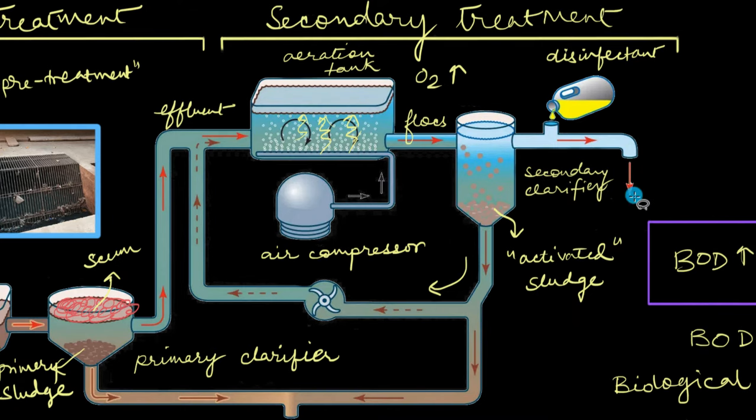This red arrow means that we are releasing the treated water, the completely treated water, back into the environment. Sometimes we also go a step ahead and treat this already treated water a little bit more, and we also use it for drinking purposes. This water is treated to such an extent that you can go ahead and consume it. How crazy is that? Toilet water to drinking water.